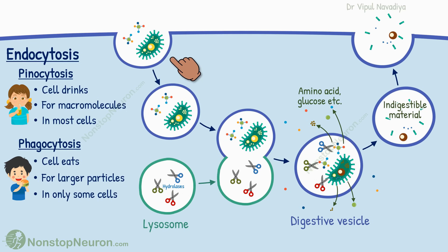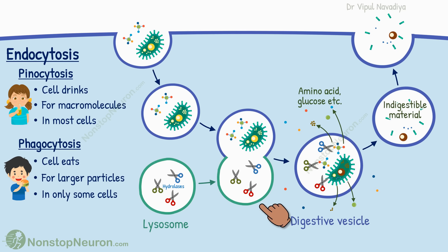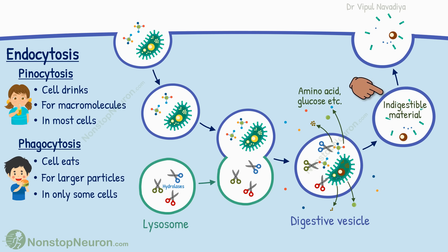Now let's have a quick summary. Entry of large particles inside the cell happens by endocytosis, where the cell membrane wraps around the particle and breaks off a vesicle inside the cell. Pinocytosis is drinking by the cell — large macromolecules are taken in by this process and it occurs in most cells. Phagocytosis is eating by the cell; it takes very large things like bacteria or whole cells, and only some cells are capable of it. The vesicle formed by endocytosis merges with a lysosome to form a digestive vesicle, where ingested particles are broken down. Small molecules like amino acids and glucose enter the cytoplasm, and indigestible material is excreted out of the cell.